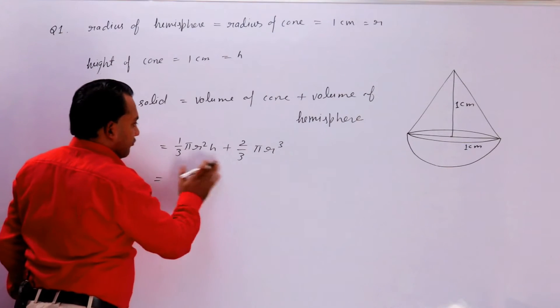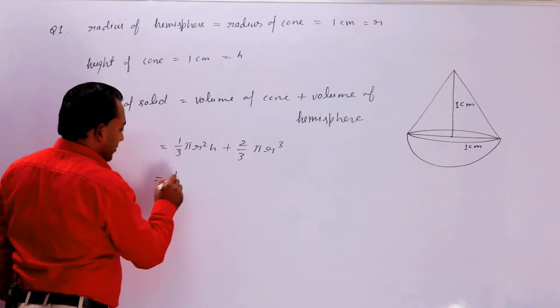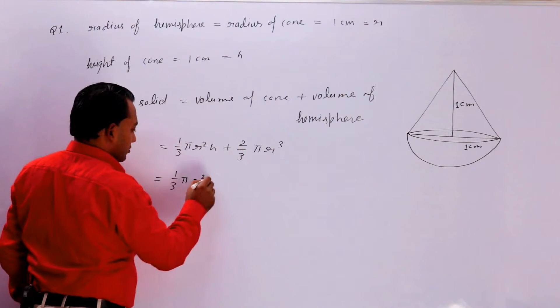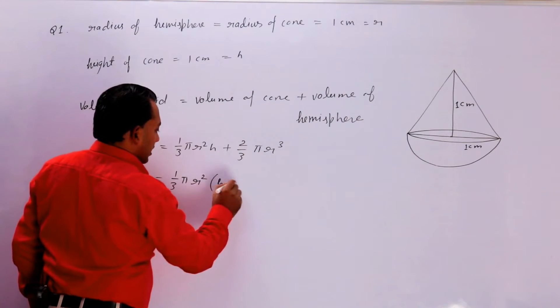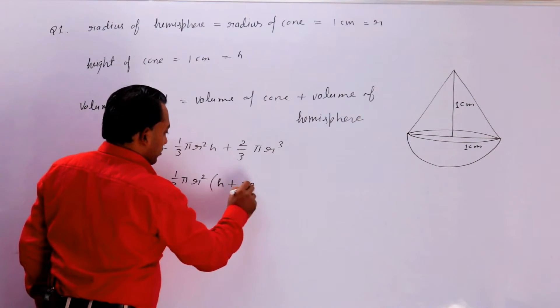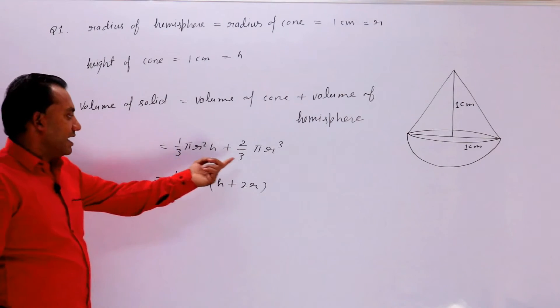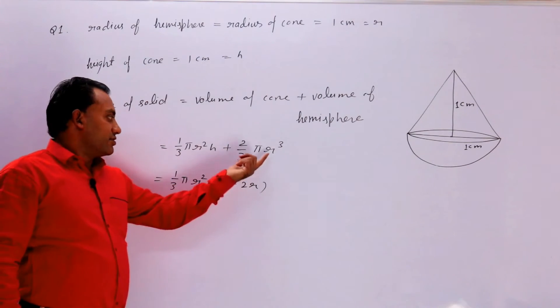और इसमें आप formula में common कर लेते हैं तो ये हो जाएगा 1 upon 3 πr² common कर सकते हैं बच्चो. तो यहां बचा h और यहां बचेगा 2r. समझ आ रहा है?